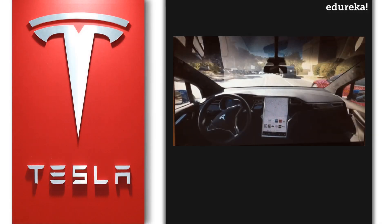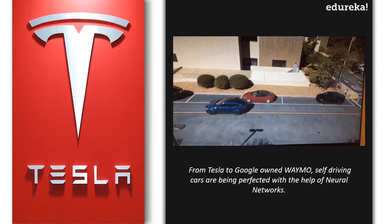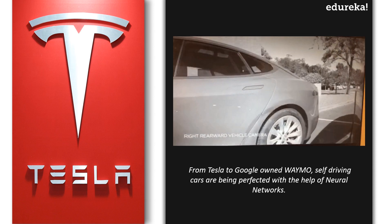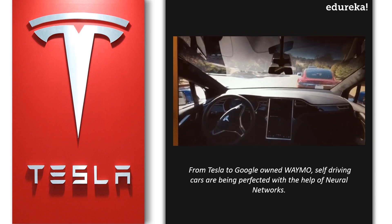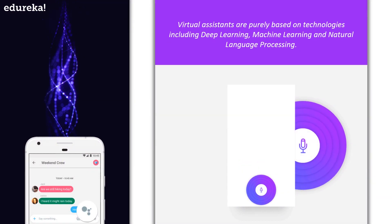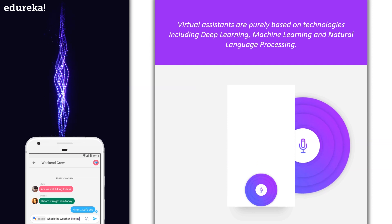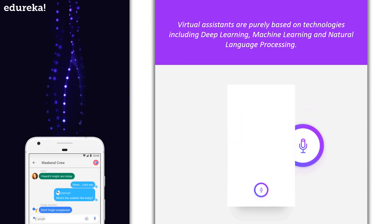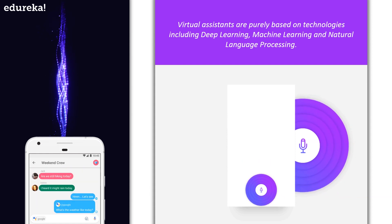Let's not forget automated self-driving cars. Deep learning has played a huge role in the field of self-driving cars — from Tesla to Google-owned Waymo, self-driving cars are being perfected with the help of neural networks. Then of course, we have virtual assistants like Siri, Alexa, and Cortana. These assistants are purely based on technologies including deep learning, machine learning, and natural language processing.